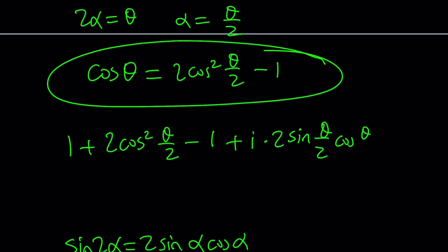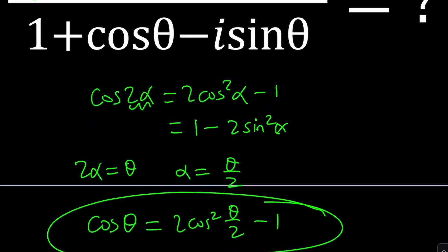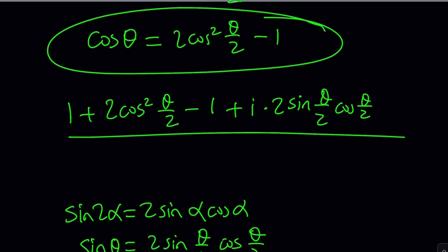Let's do it. And of course, we have to do it twice, right, for the denominator as well. The only difference, by the way, is just the minus sign before the i. So it's going to be exact same thing here, exact same thing, minus i times 2 sine theta over 2 times cosine theta over 2.